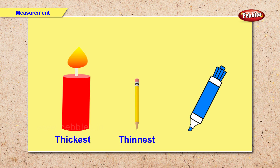Now we have a candle, a pencil and a marker. And you are going to tell me which object is the thickest and which object is the thinnest. Right. The candle is the thickest. The pencil is the thinnest.